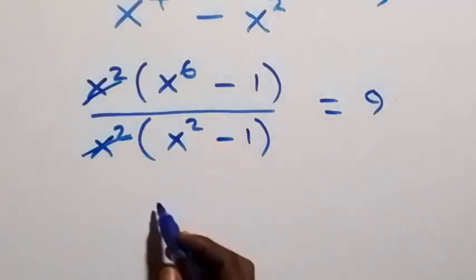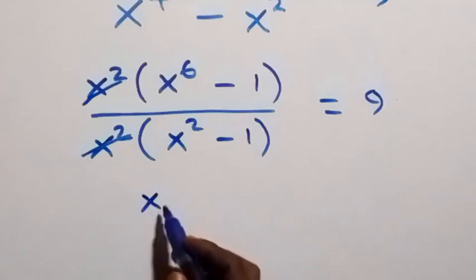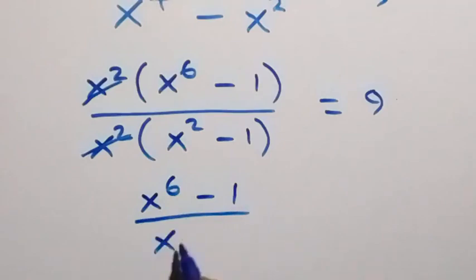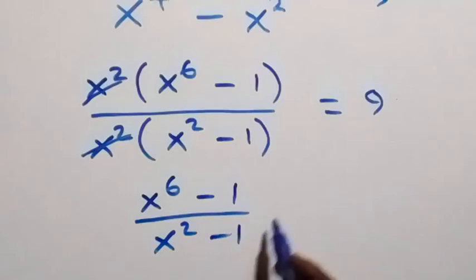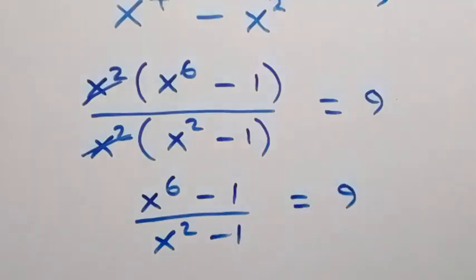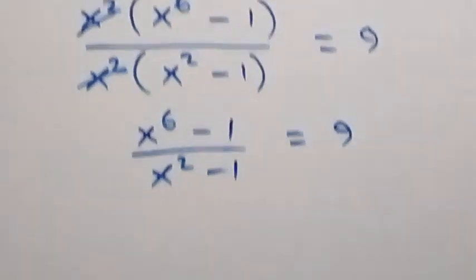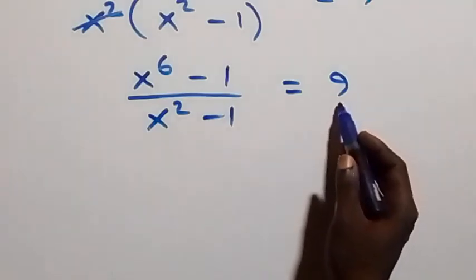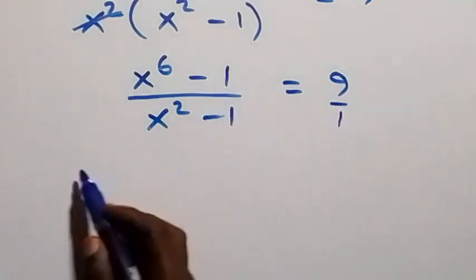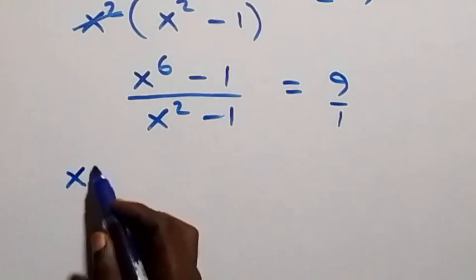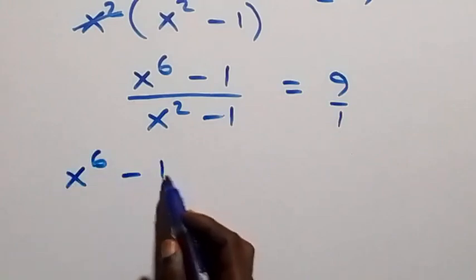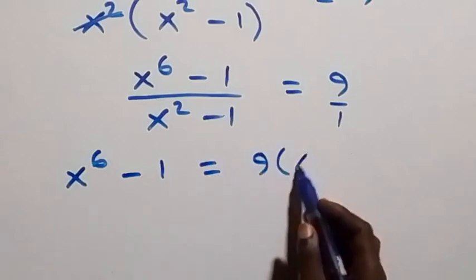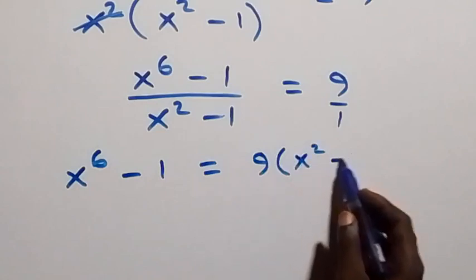From here, x² we cancel out, then we are left with x⁶ minus 1 over x² minus 1 equals to 9. From here, we can cross-multiply — this 9 over 1 — and when we cross-multiply, this becomes x⁶ minus 1 equals to 9 multiplied by x² minus 1.